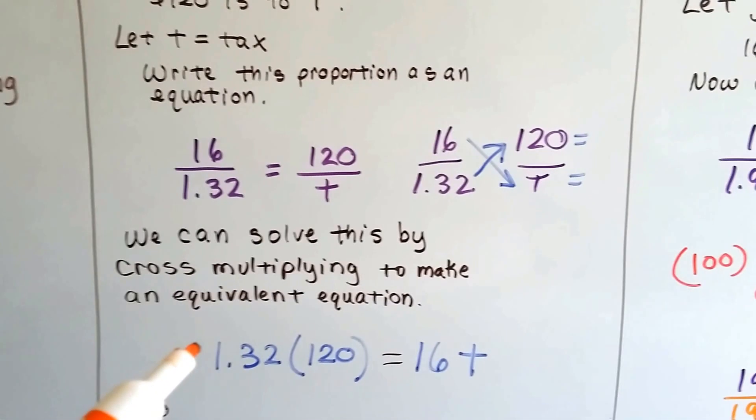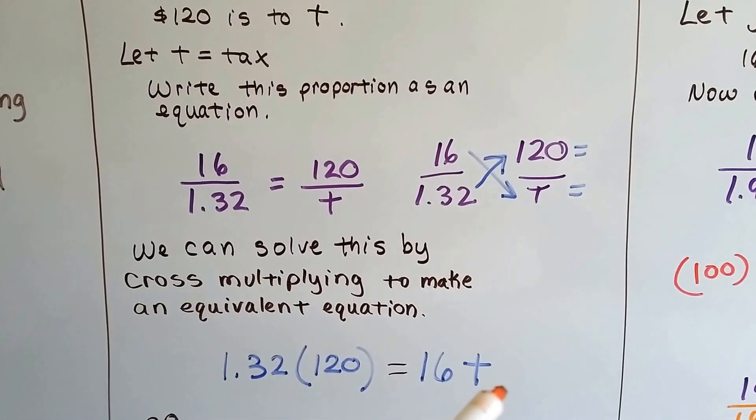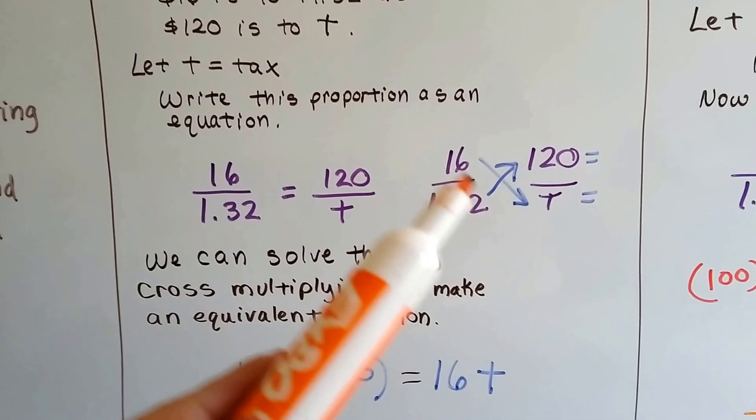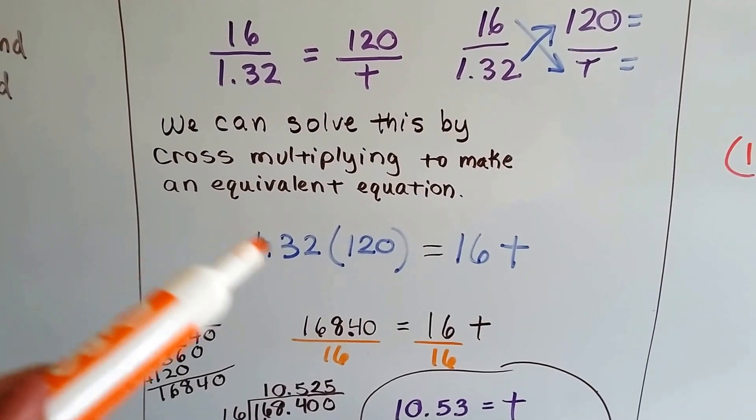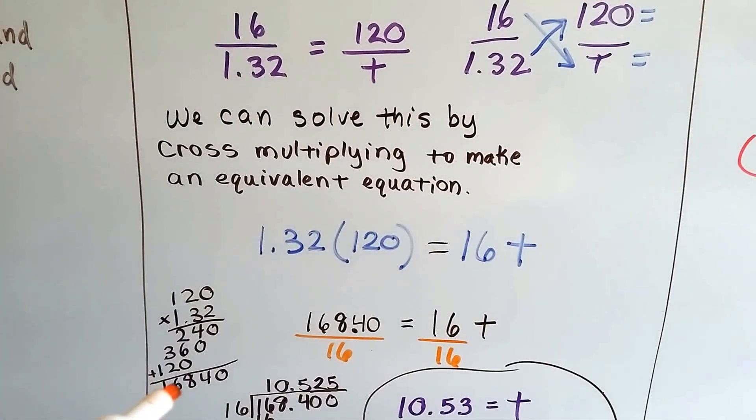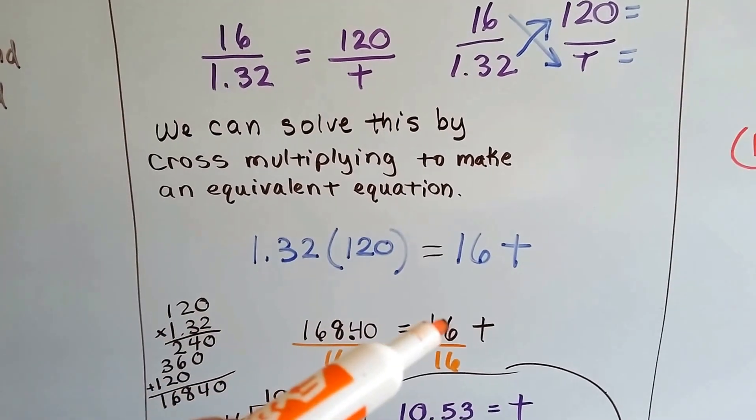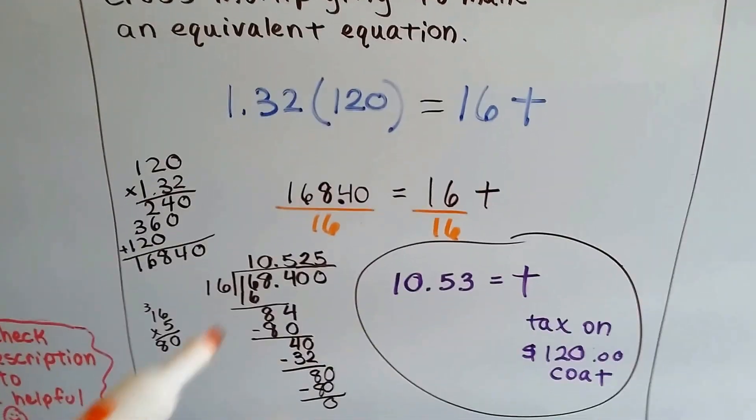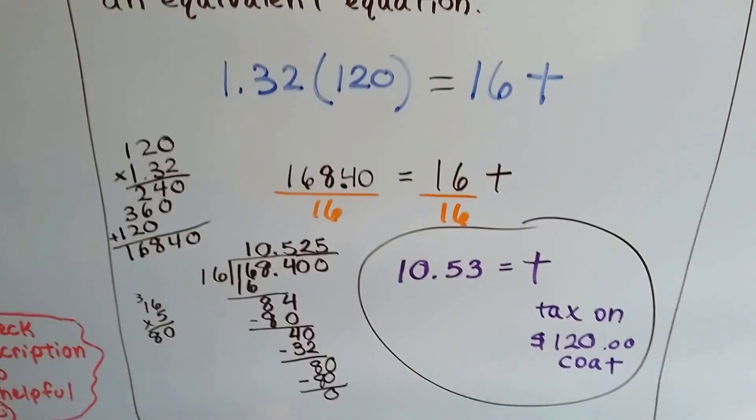What we come up with is $1.32 times $120 equals 16T. See? This one is equal to this one. And all we have to do is multiply these two together. $1.32 times $120 is $168.40. And we've got 16T. Now we can just divide both sides by this coefficient, 16.